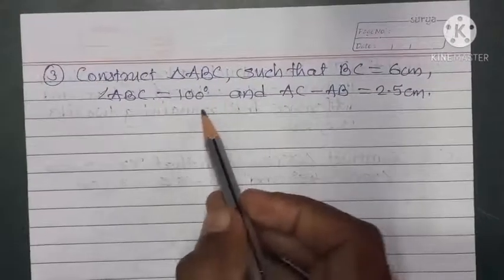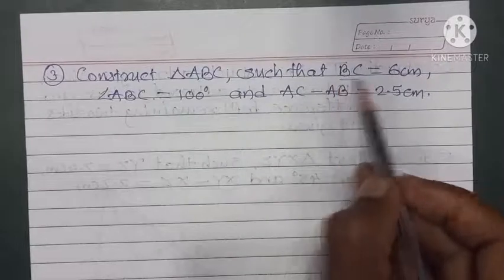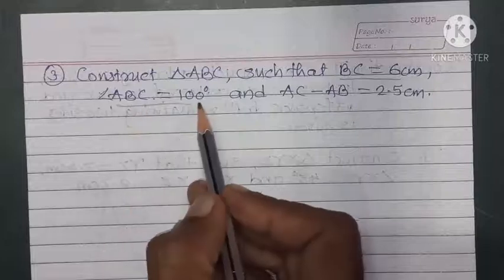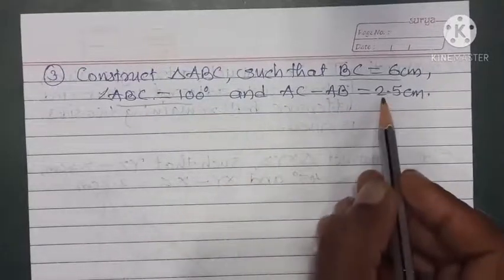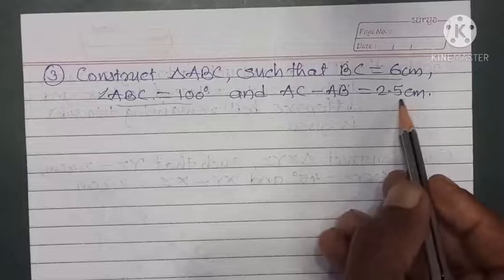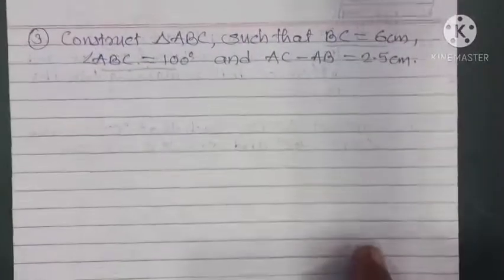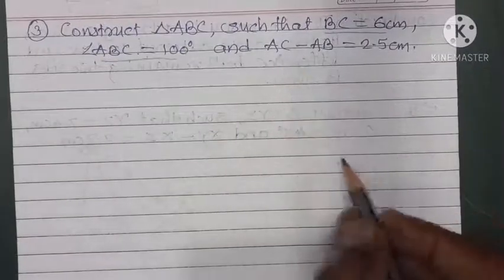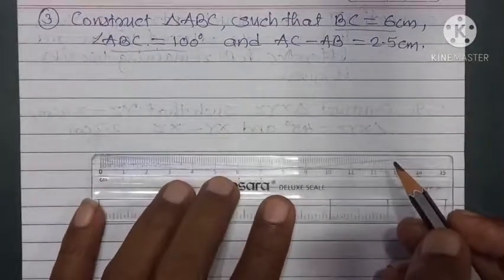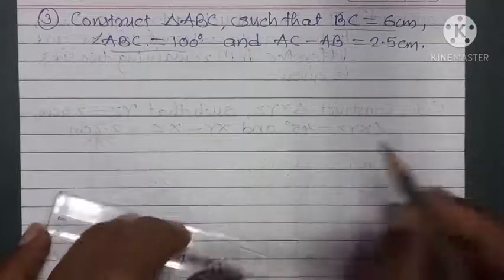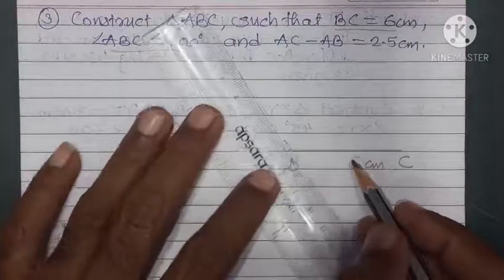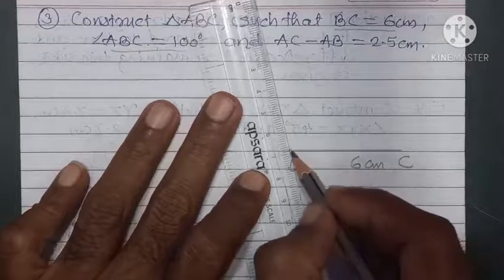Now the second type example: construct triangle ABC such that BC is the base, one of the base angles is 100 degrees (angle B = 100 degrees), and AC minus AB = 2.5 cm. This time, the second side (AC) is greater. Let us first draw the analytical figure. In the analytical figure, base BC = 6 cm, angle B = 100 degrees.